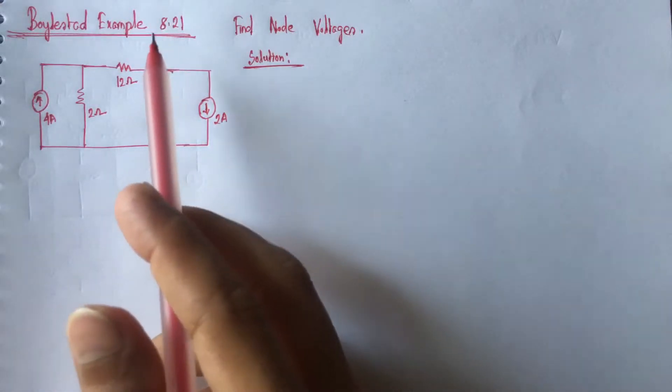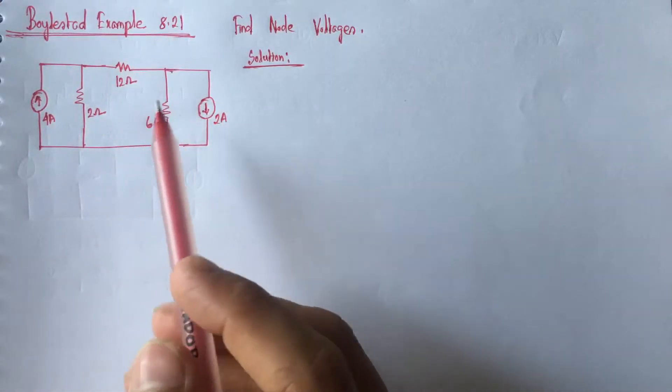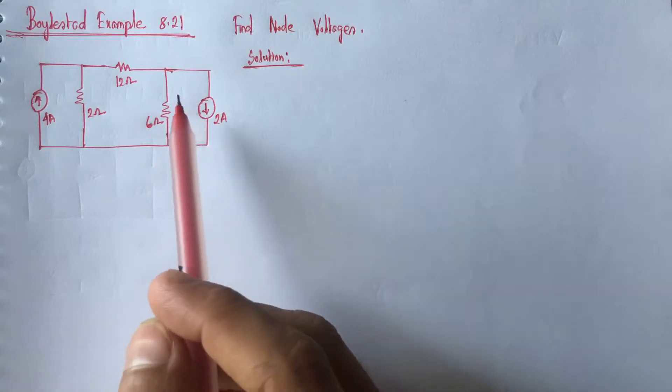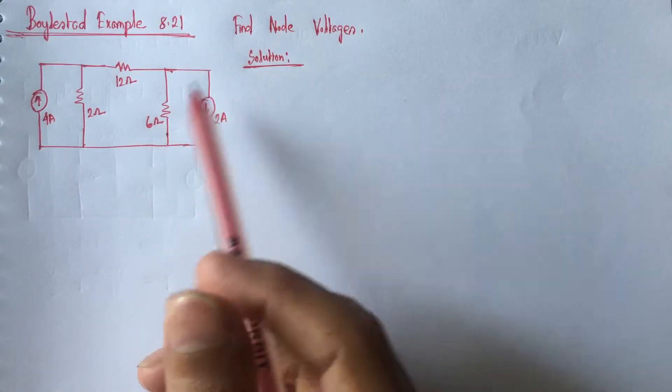Hi viewers, today we will solve example 8.21 from Boyle State. This is a nodal analysis problem. Here we have to identify node voltages for the circuit.